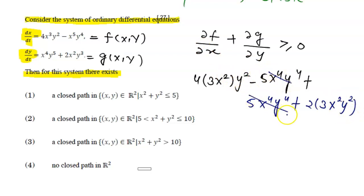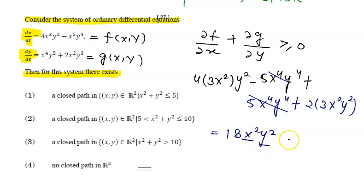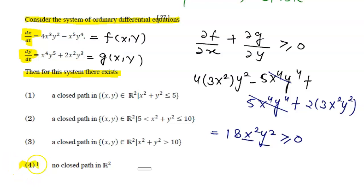The two terms with 5x⁴y⁴ cancel out respectively. What remains is plus minus giving 6 plus 12 equals 18, so we get 18x²y². As we know, x²y² is always greater than or equal to zero, so the overall term is greater than or equal to zero. Therefore, there is no closed path in ℝ², and option D is the correct answer.